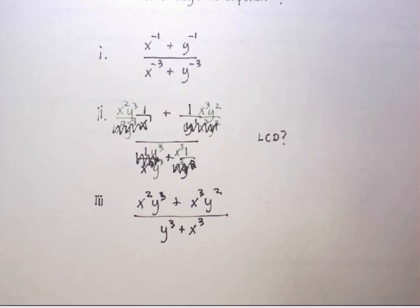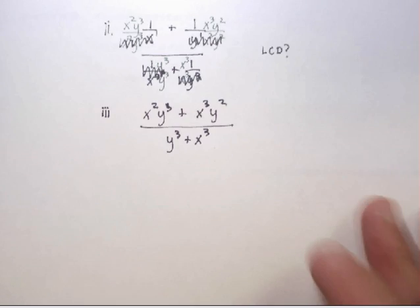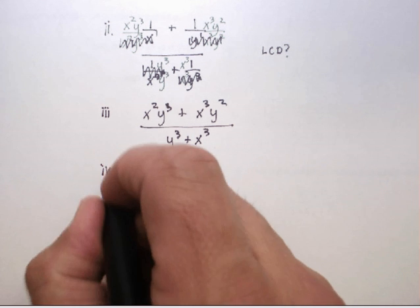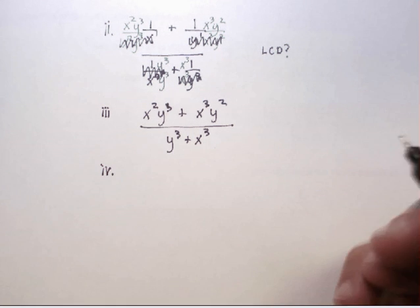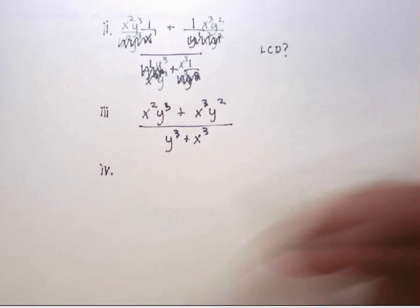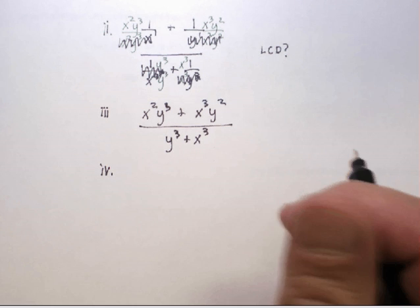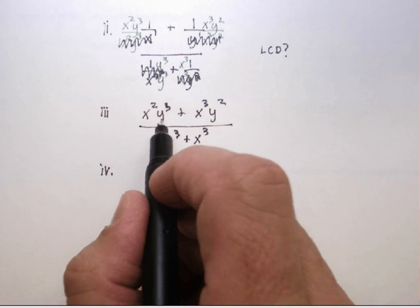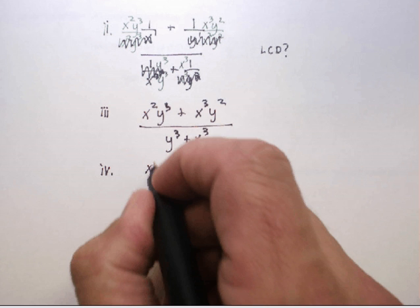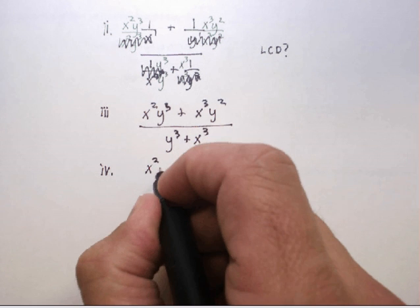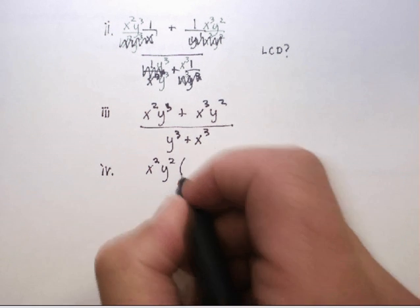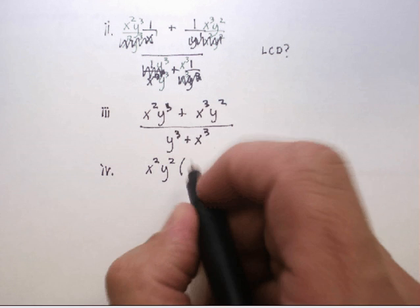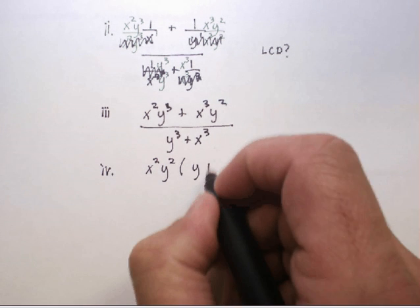So what do we do with this? The numerator is a binomial, and you ask yourself how do I factor a binomial. First, take out the most common factors. In this case it's x squared y squared. Taking out x squared y squared leaves me with y plus x.